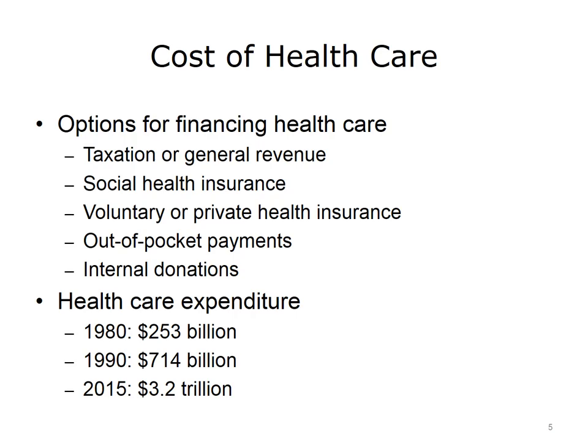When we look at the cost of healthcare, there are five general options for financing healthcare. The first is taxation, or general revenue. The second is social health insurance. The third is voluntary or private health insurance. The fourth option is out-of-pocket payments that patients make to take care of their illnesses. And the fifth is external donations, which may come from communities, organizations, or professional societies.